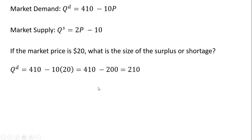At $20, consumers are willing and able to buy 210 units. Let's see what happens on the supply side. Taking that same $20 and plugging it into the market supply, we see that sellers are willing to bring 30 units to the market. 2 times 20 minus 10 is 40 minus 10, or 30 units.